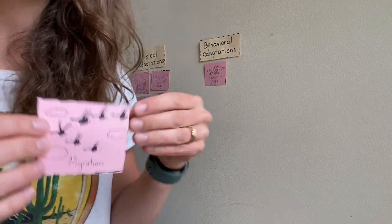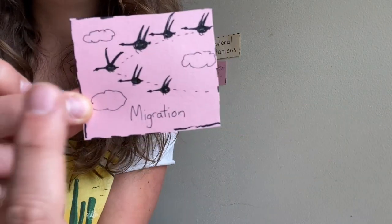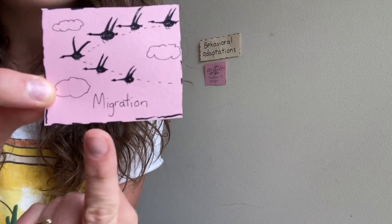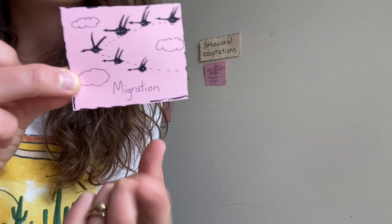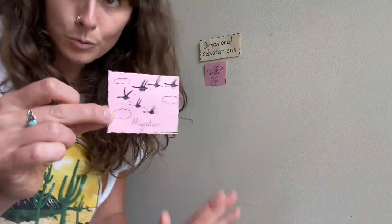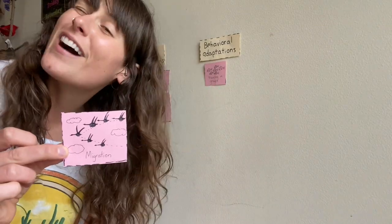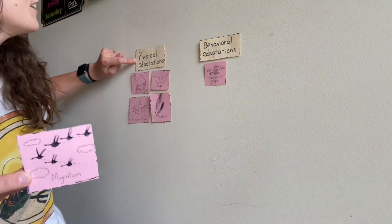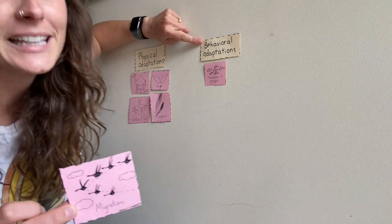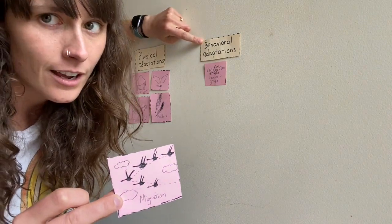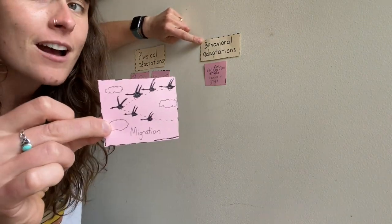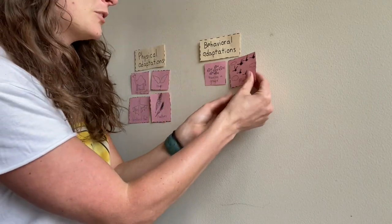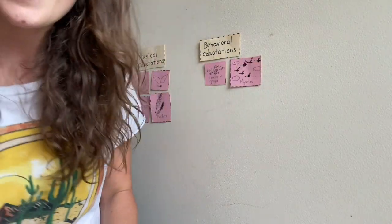Next — ooh, this is a good one. If you guys see, we have some geese here that are flying, and underneath we have the word migration. Now, if you guys were listening at the beginning of this video, I already told you this answer in one of our definitions. So, is this physical or a behavioral adaptation? I know you guys are listening, so I'm just going to put this one down and we're going to move on.